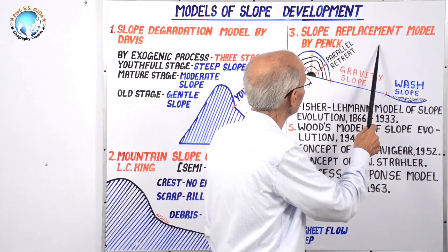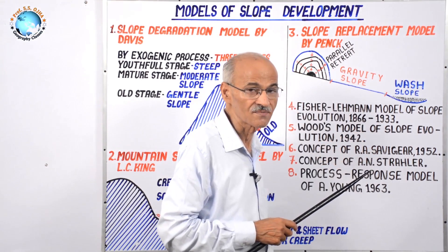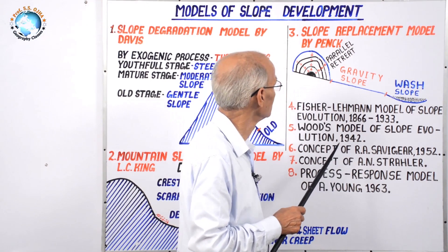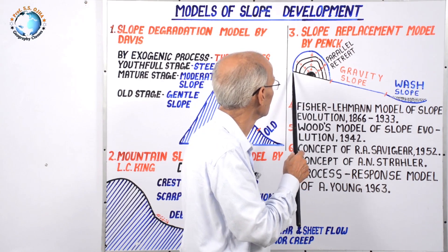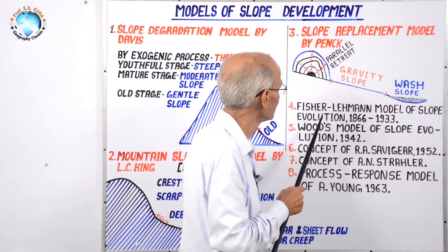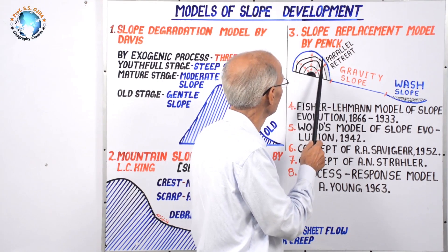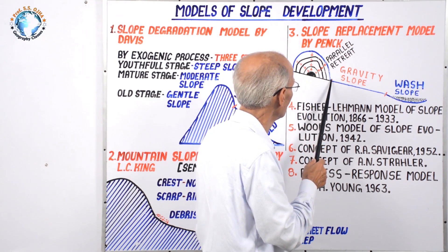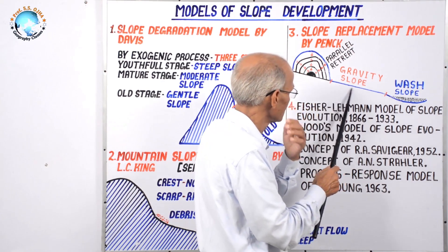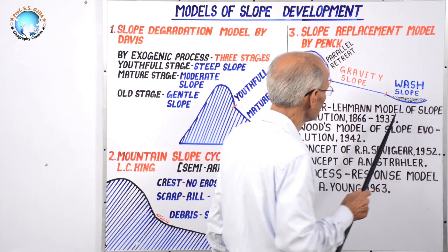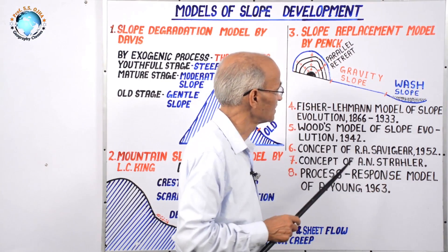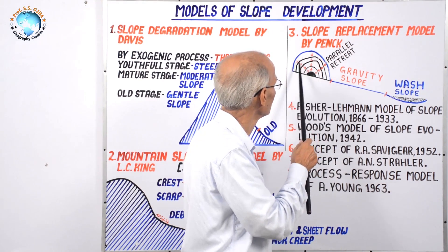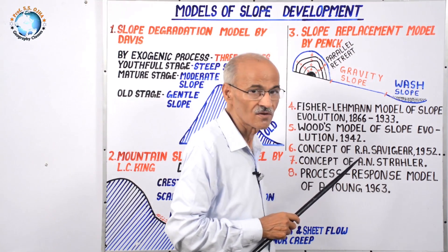The third model is the slope replacement model by Walter Penck, based on his concept of geomorphic systems and landform evolution. He proposed that on a hilly or mountainous tract, a convex slope develops first, followed by a free face slope, then a rectilinear slope, and finally a concave slope.